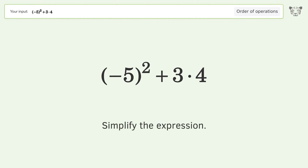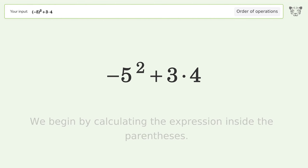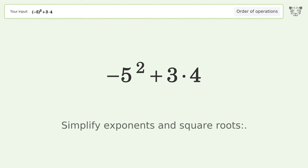Simplify the expression. We begin by calculating the expression inside the parentheses. Simplify exponents and square roots: negative 5 squared equals 25.